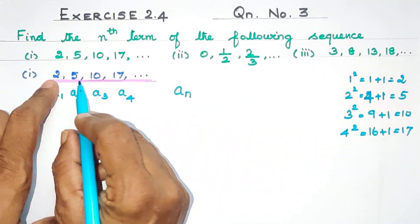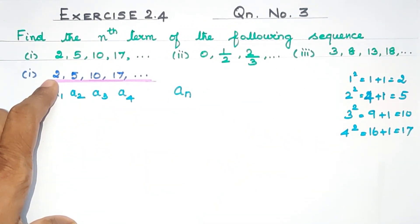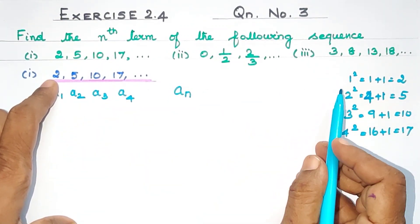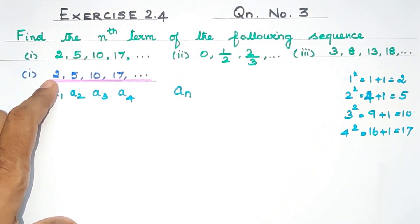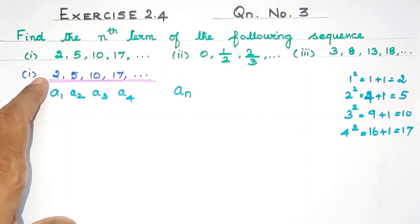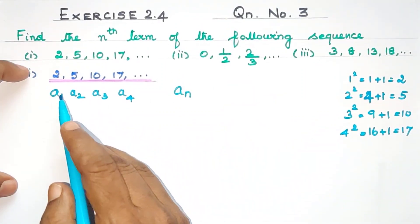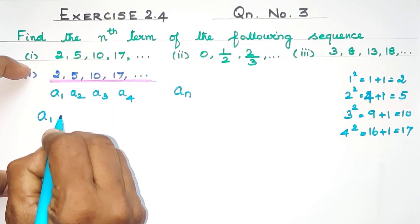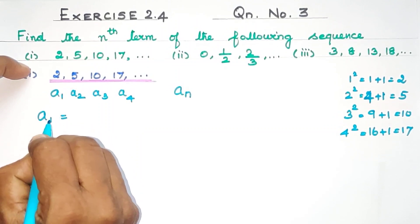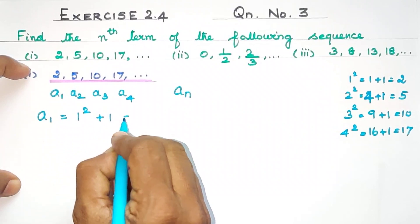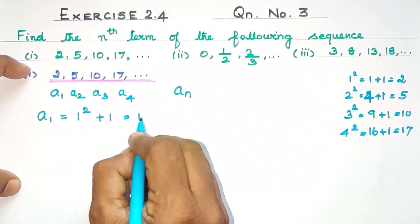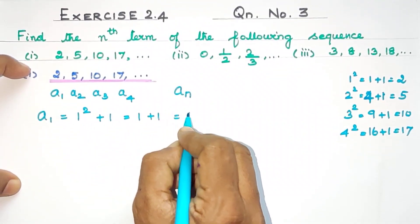So if you look at this sequence, the numbers are in terms of 1, 2, 3, 4. If you look at this pattern, the general term will be easier to form. So if I say A1, this is the number of the first square. So 1 squared plus 1 is equal to 2.